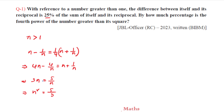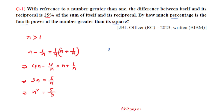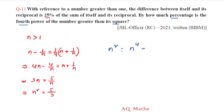So n squared equals 5/3. The question asks by how much percentage is the fourth power of the number greater than its square. The square of the number is n squared, and the fourth power is n to the power of 4. The ratio of n to the 4th power to n squared simplifies to 1 is to n squared.